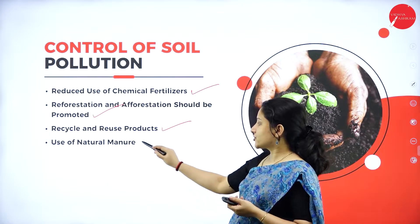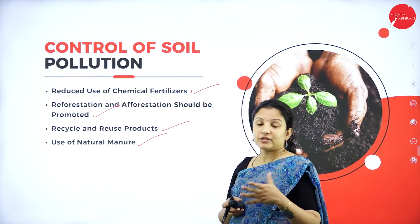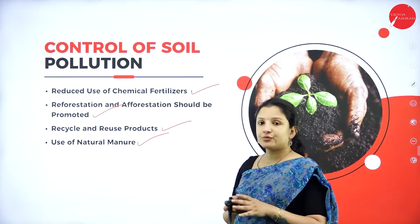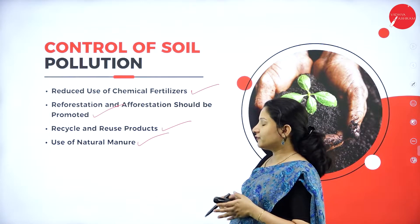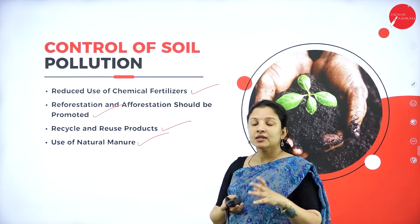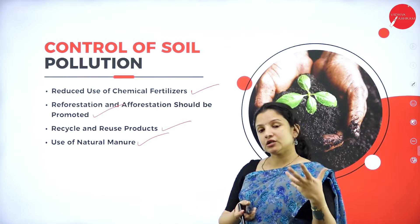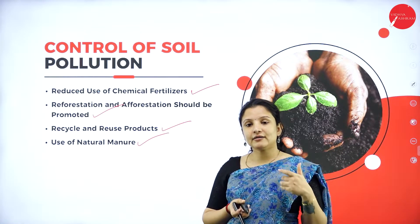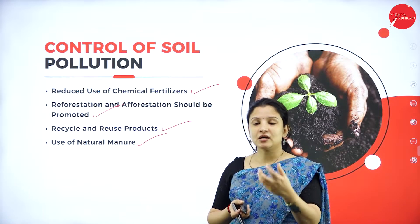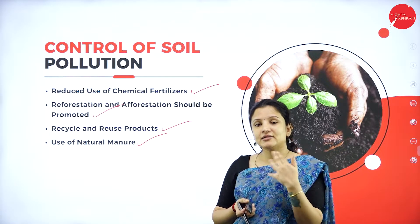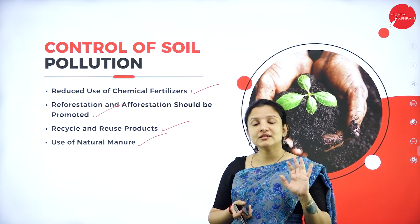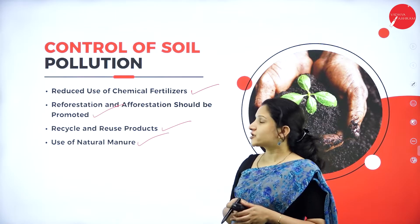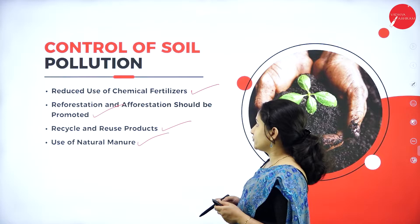Next is the use of natural manure such as cow dung or vermicompost. Vermicompost is obtained from earthworms — when earthworms feed on dead plants and excrete, that excreta is mixed with soil to make a natural compost which can be used in agricultural fields. Therefore, the use of natural manure can also help control soil pollution.